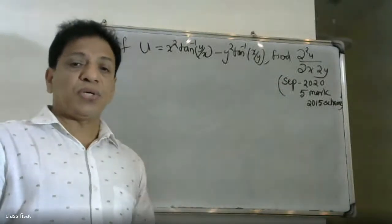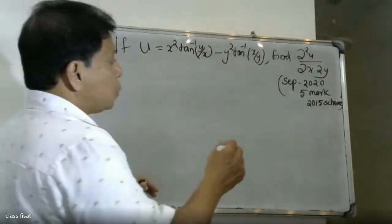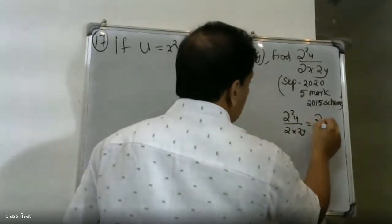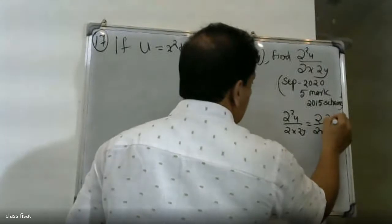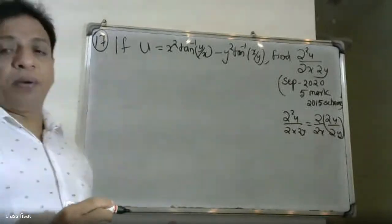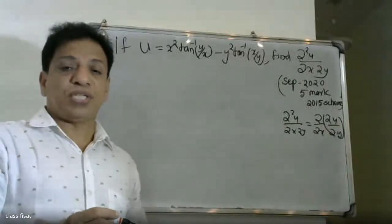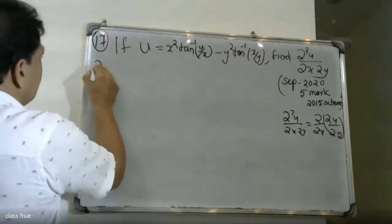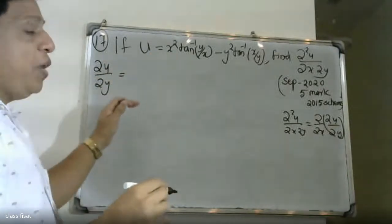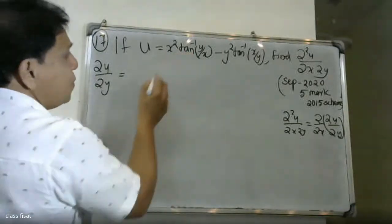The entire problem uses the stimulus principle. We are going to find dou square u by dou x into dou y, which equals dou by dou y of dou u by dou x, or dou by dou x of dou u by dou y. So we begin by finding dou u by dou y. We are going to partially differentiate — the first case is x square tan inverse y by x.